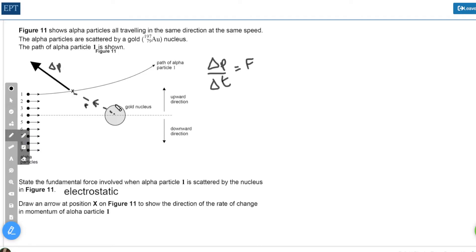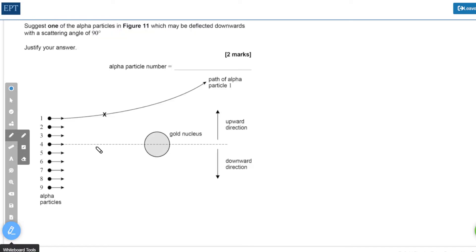Just out of interest, if we had a point y here, then you could see that the force is going to be in a slightly different direction and will be radially outwards again from the gold nucleus through the alpha particle outwards. We have to suggest a particle that will scatter through 90 degrees downwards.